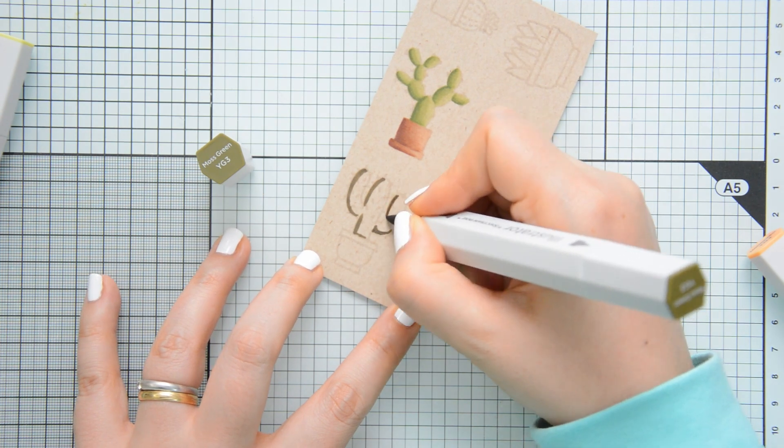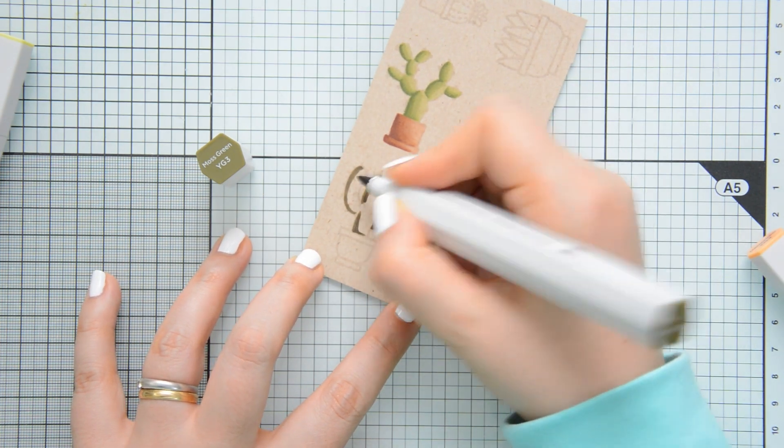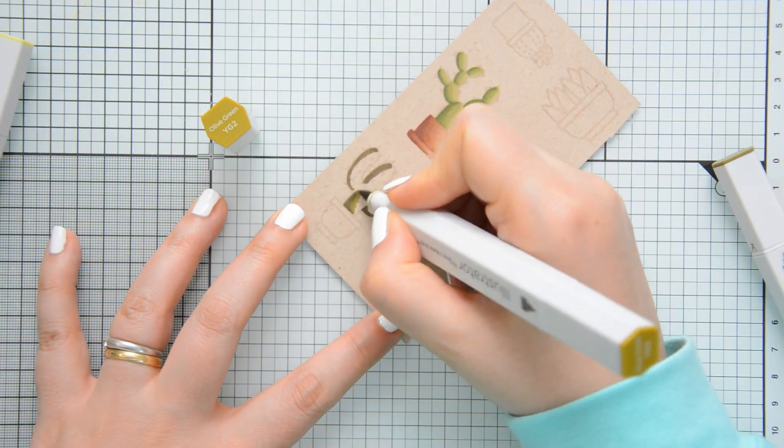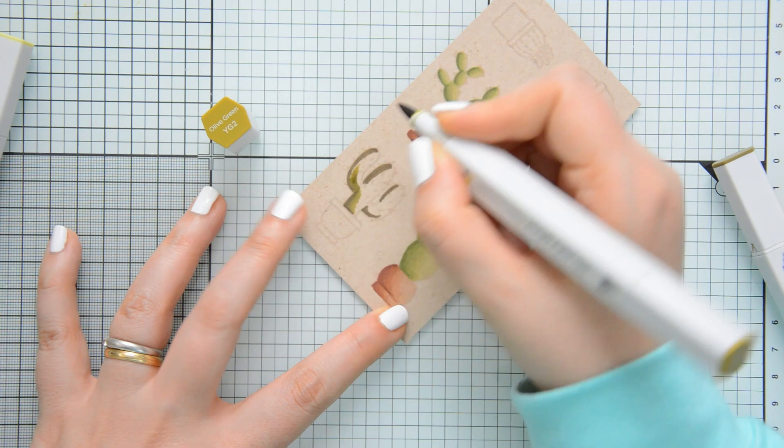The first one was DG4, DG3, DG2, and DG1. And the second one that I'm showing right now is YG3, YG2, and YG1.